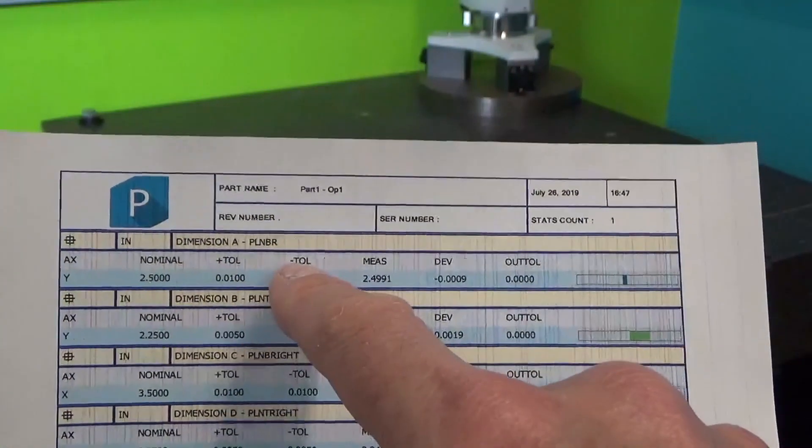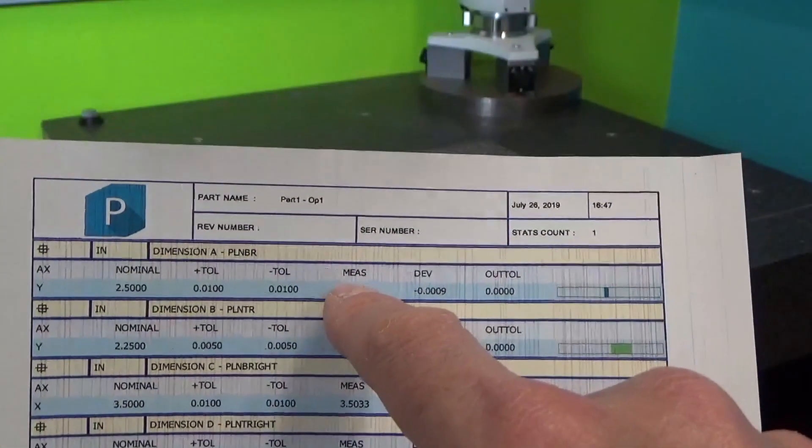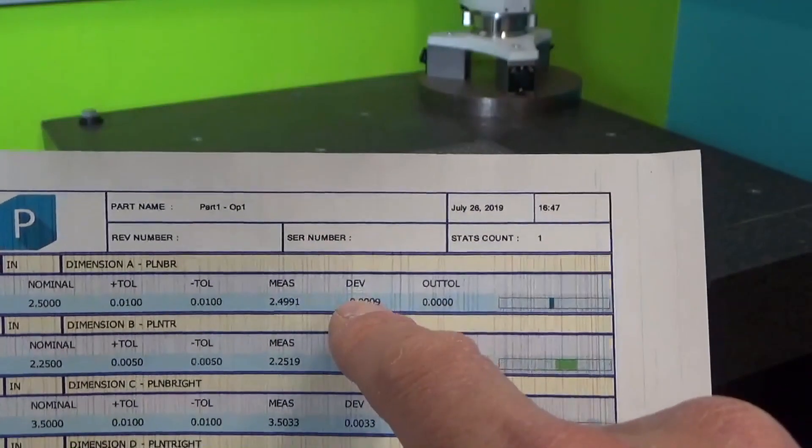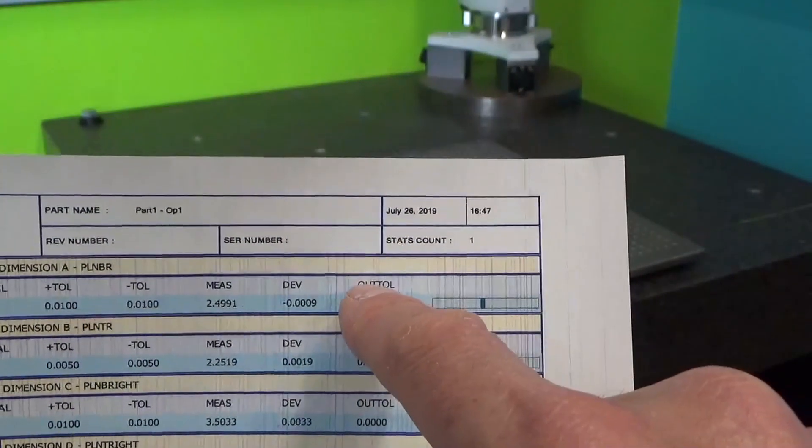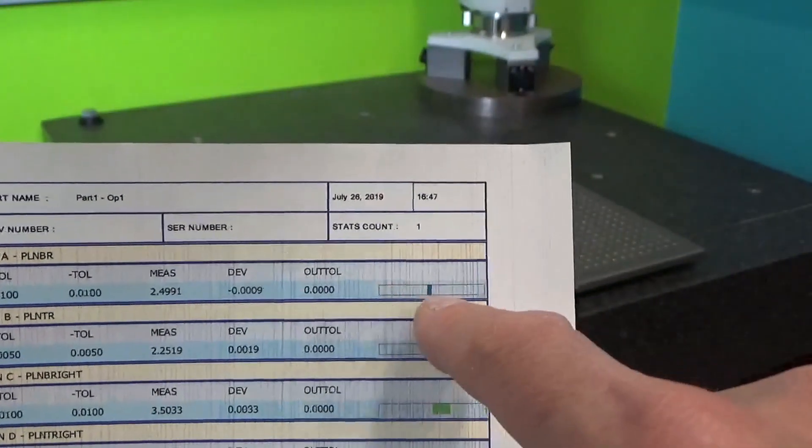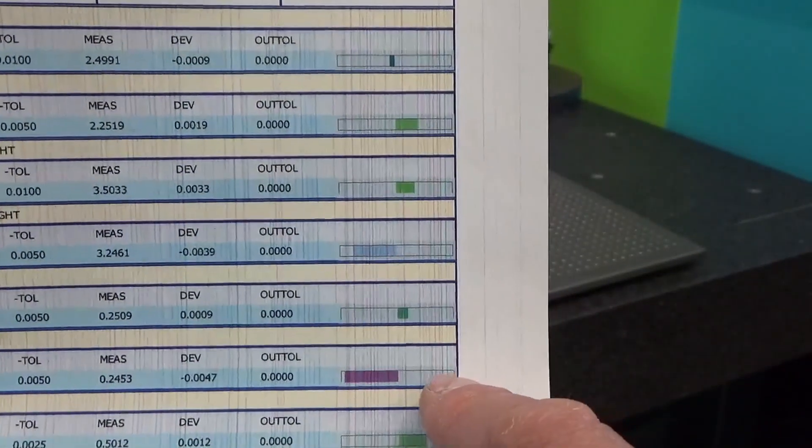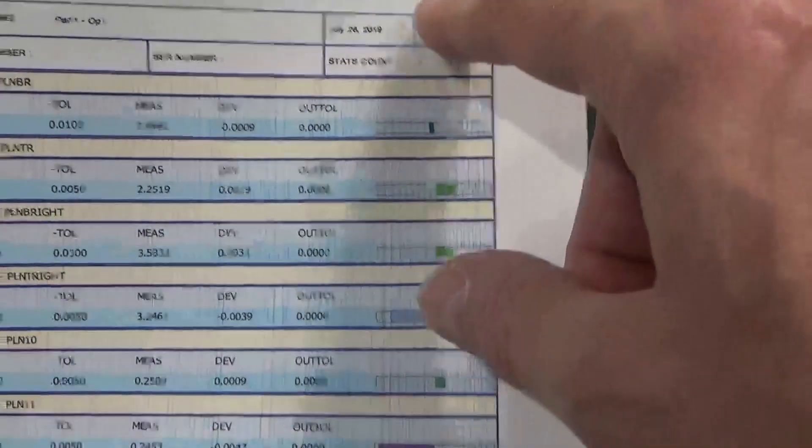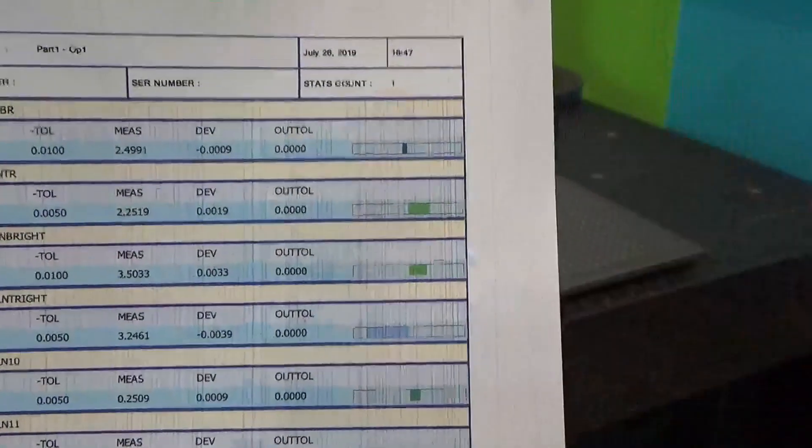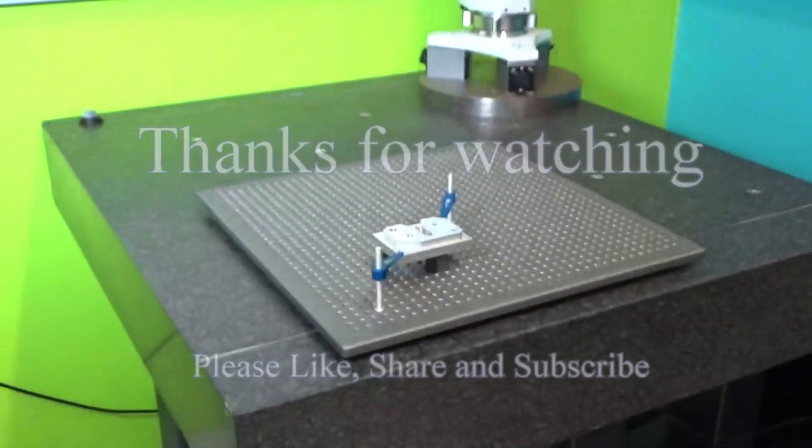The outcome is this report and we see our nominal dimension and the tolerances. What we actually measured, how much deviation there is and if it's out of tolerance. This bar graph shows whether it's green, red, purple, or yellow. You want green for it to pass.